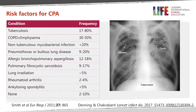We can see here the risk factors for chronic pulmonary aspergillosis. Virtually all cases of CPA occur in patients with underlying lung disease. The range in frequencies reflects different studies in different populations worldwide. In all studies, even in developed countries, the most common underlying condition is prior pulmonary tuberculosis. In countries such as Africa or parts of Asia, underlying TB can be responsible for up to 80% of cases. Other predisposing conditions include COPD, non-tuberculous mycobacterial infections, sarcoidosis, and lung cancer.